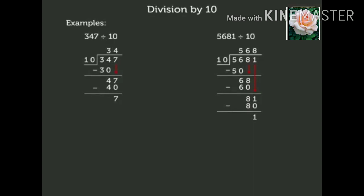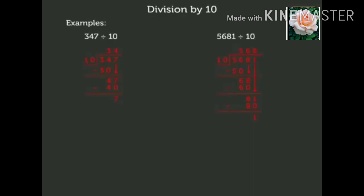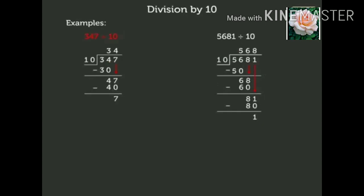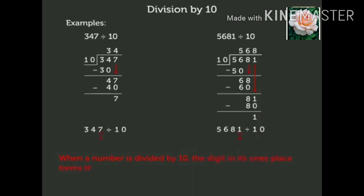Look at the board. We have solved two examples by the division method. Look at the first example. Here we got the quotient as 34 and remainder as 7. Now look at the second example: 5681 divided by 10. Here we got the quotient as 568 and remainder as 1. Did you notice that when we divided both the numbers by 10, the digit in their ones place formed the remainder and the remaining digits formed the quotient.